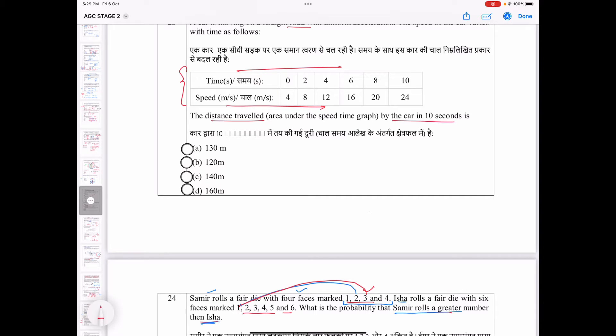This is time and this is speed of the car. The distance traveled by the car in 10 seconds. And here in the bracket, there is an important thing that you have to read: area under the speed time graph.